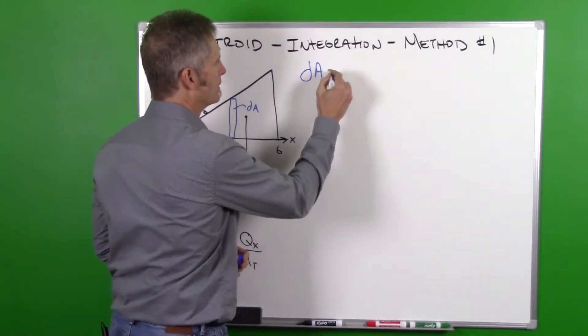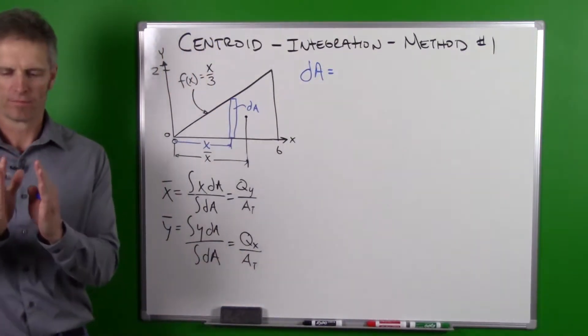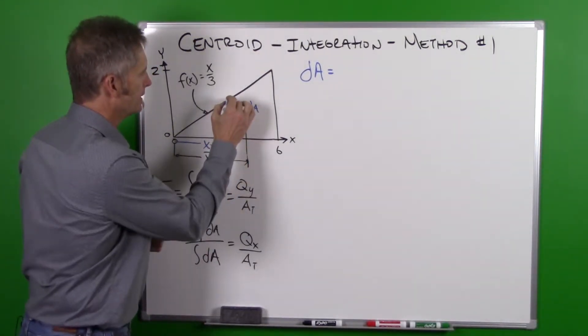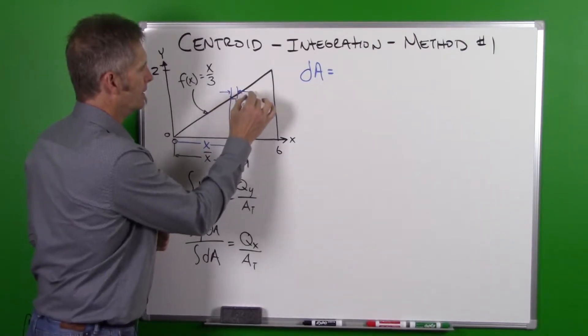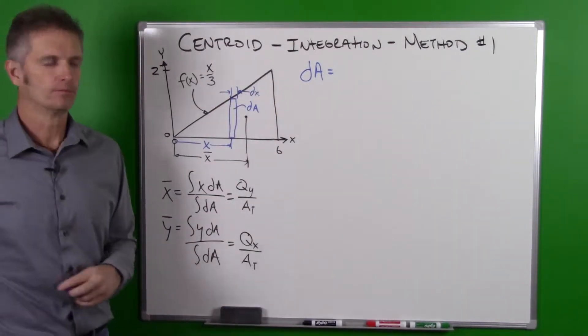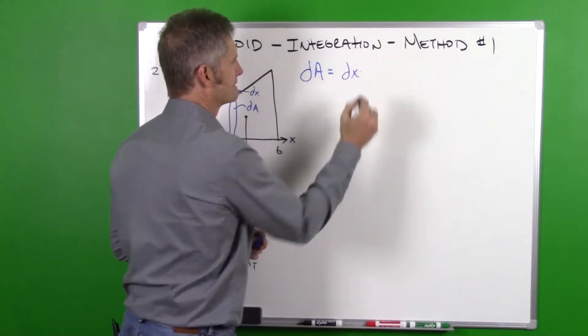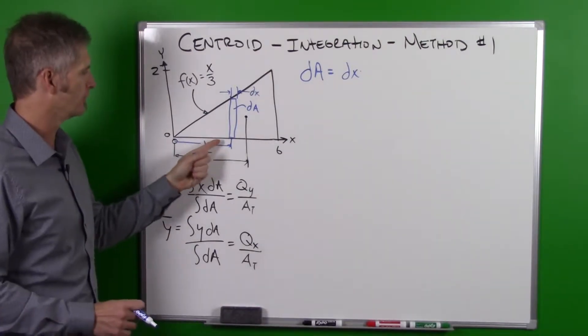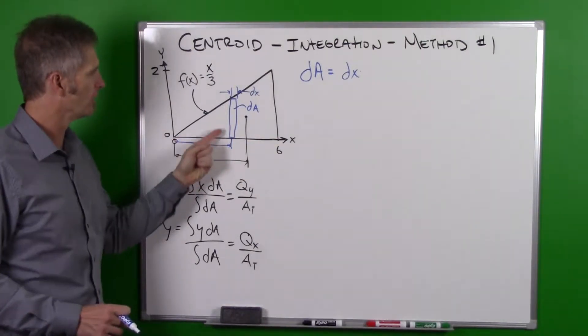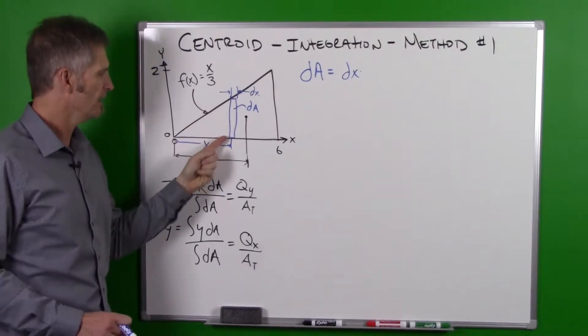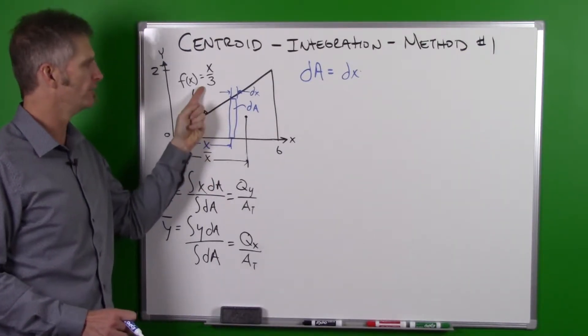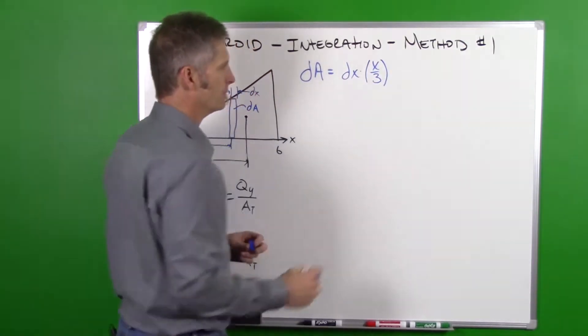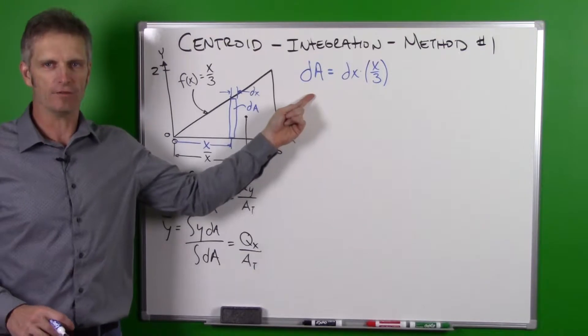We need to say dA is going to be equal to the base times the height. So in this case the base, the thickness, we're going to call that dx. So the width is dx times the height. What is the height of this dA? The height goes from the x-axis all the way up to our function line. So the height is going to be equal to the function. Here we have x divided by 3. So now we have our dA defined.